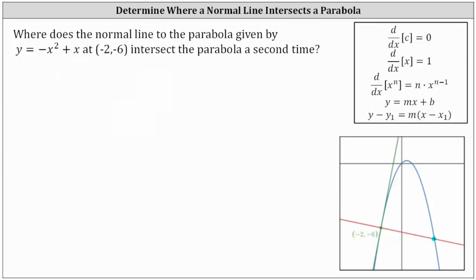We are given y equals negative x squared plus x, and therefore y prime, the derivative, is equal to negative two x plus one. Now we'll evaluate this derivative at x equals negative two to determine the slope of the tangent line. So y prime of negative two is equal to negative two times negative two plus one, which is equal to four plus one, or five.